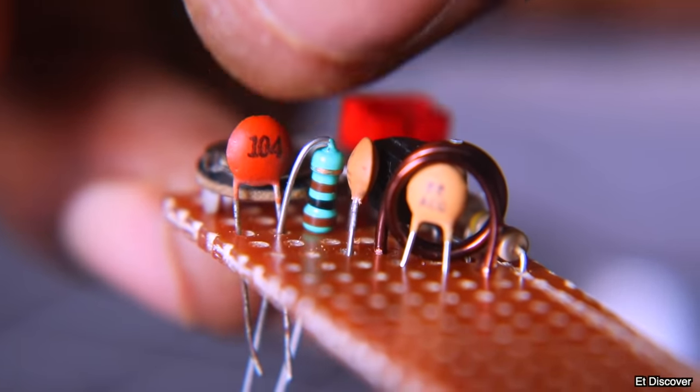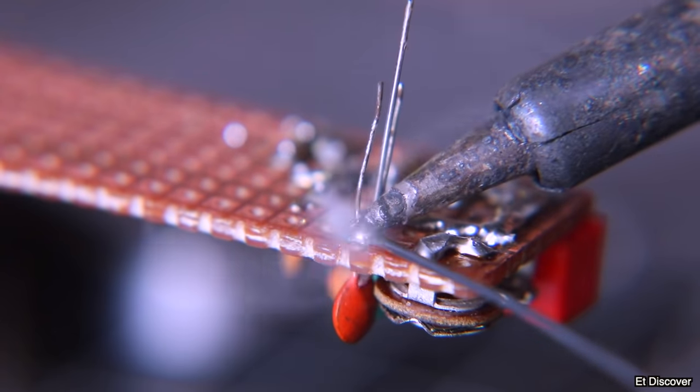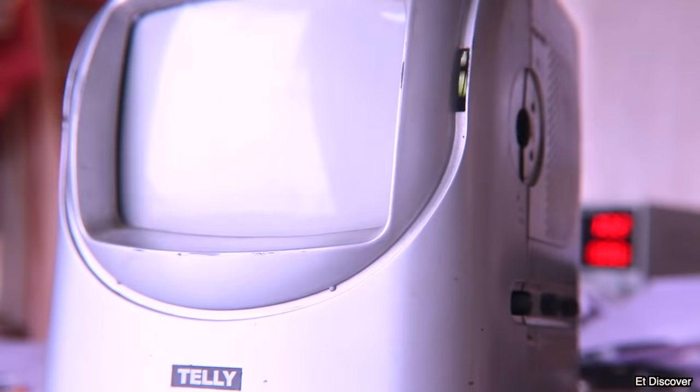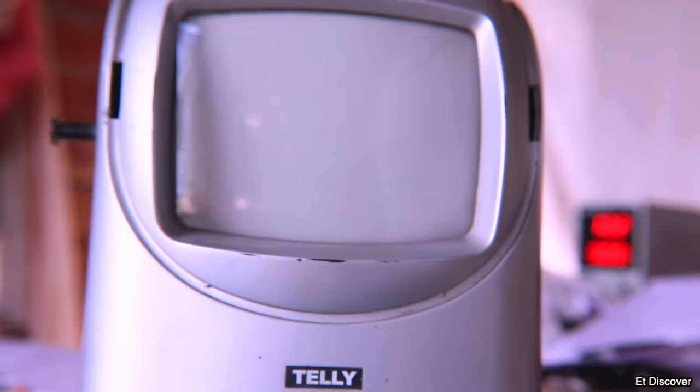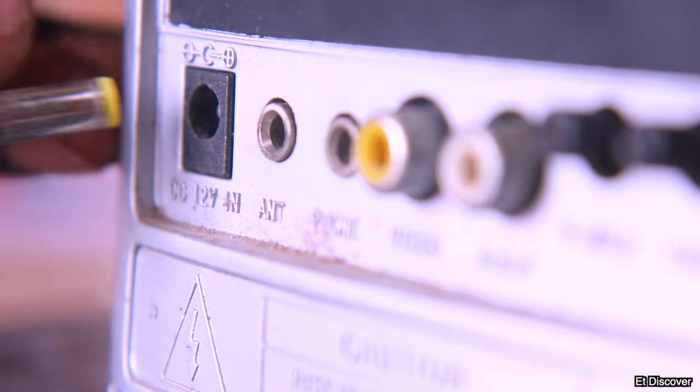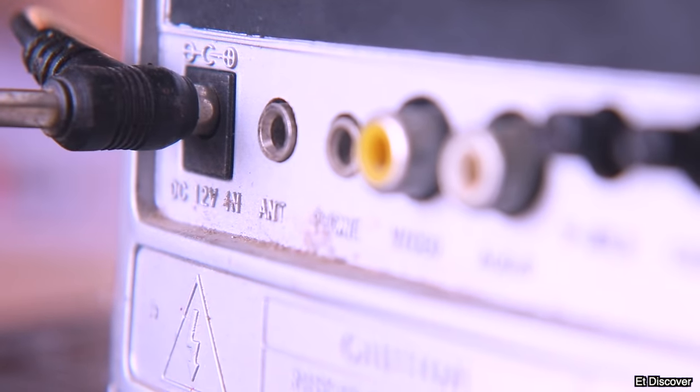Our circuit is completed. But now is the time to check that it is working properly or not. I have chosen here an old primitive analog television to analyze the video signal. You can also use color television here if you want. For running this TV, I will give the 12V to this television. See, my television is turned on properly.